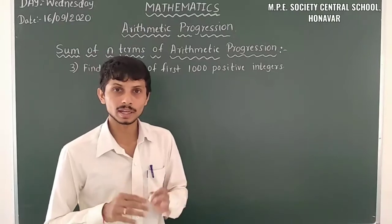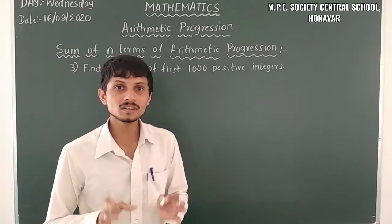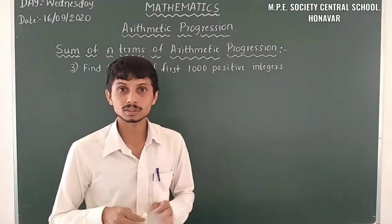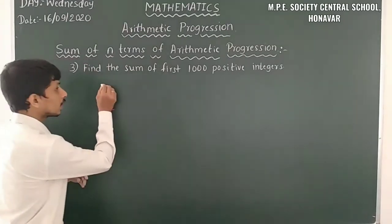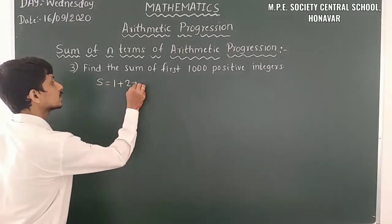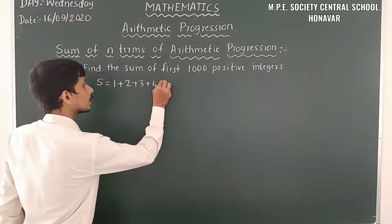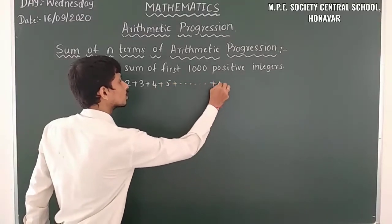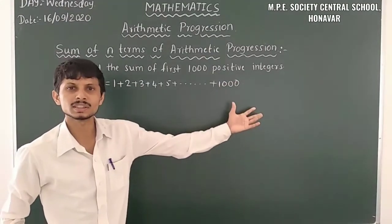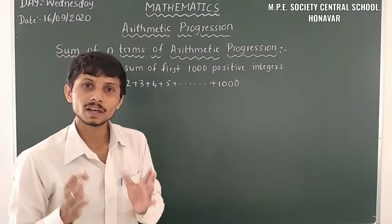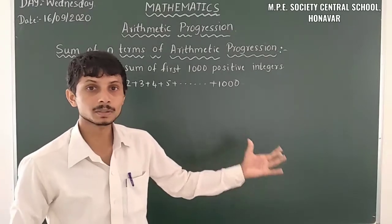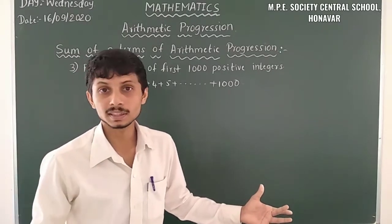The formula is Sn = n/2 × (2A + (n−1)D). Firstly, we have to write the arithmetic progression. Sn = 1 + 2 + 3 + 4 + 5 + ... up to 1000. It is very very difficult to add all those terms directly. From the formula for finding the sum of n terms of arithmetic progression, it is very easy to calculate.